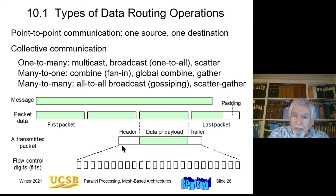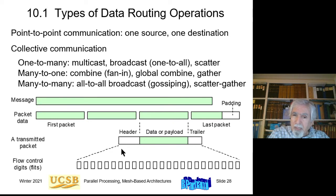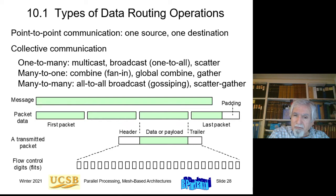Sometimes a packet is not sent as one piece but is divided into small pieces called flow control digits, or flits. For some communication protocols, the flit — not the packet — is the smallest unit. A flit is typically anywhere from one byte to maybe eight bytes. Not all protocols divide packets into flits; some communication protocols that we'll study require this subdivision.